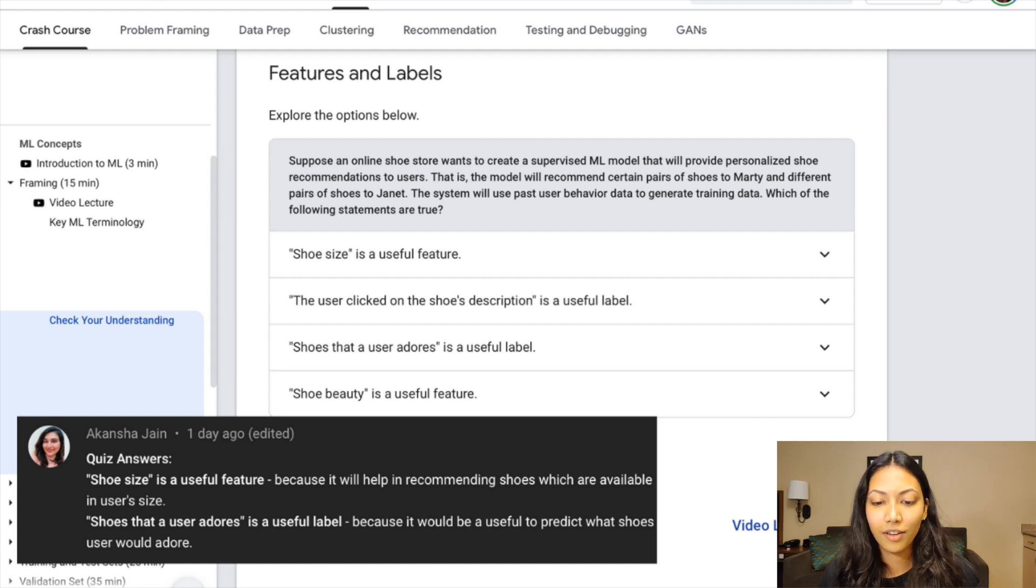So Akansha says shoe size is a useful feature because it will help in recommending shoes which are available in the user sizes. And I think that's a really good answer, that's definitely true. The other thing she also says is that shoes that a user adores is a useful label because it would be useful to predict what shoes users would adore.